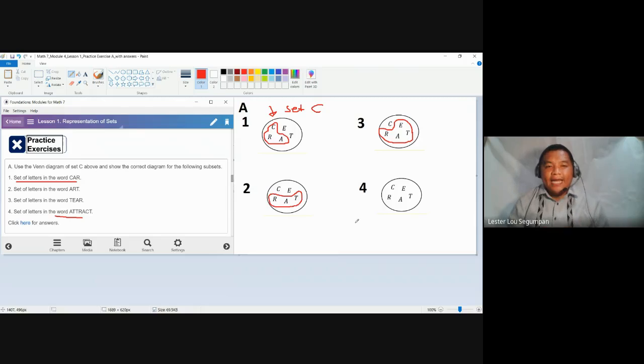Let's write it in roster forms, but you could actually be guided. So you have here A, T, no need to write another T, R, no need to write another A, C, no need to write another T. These are the elements. So you need to enclose A, T, R, C here. So you have A, T, R, C.